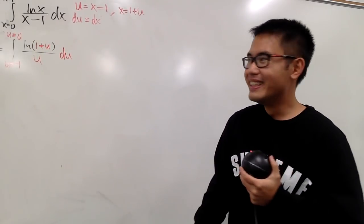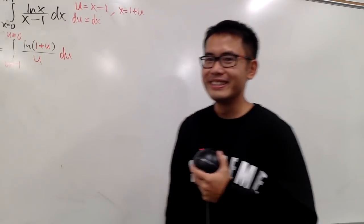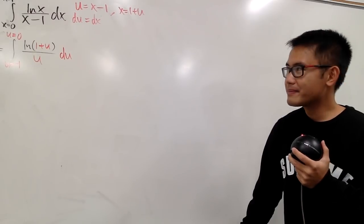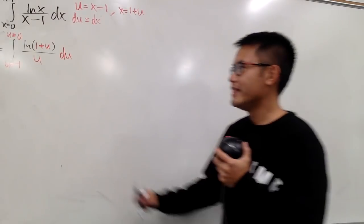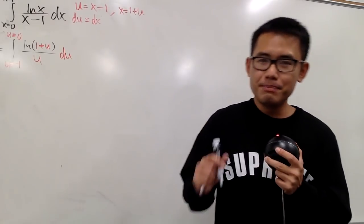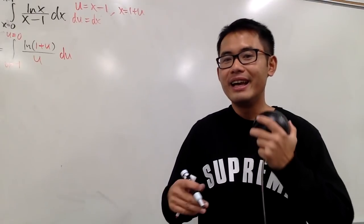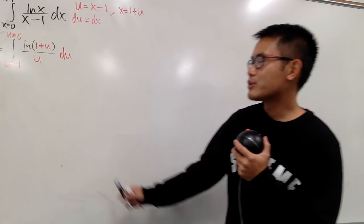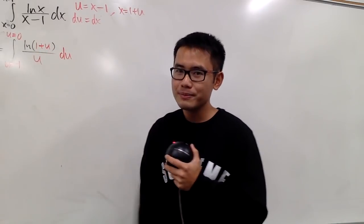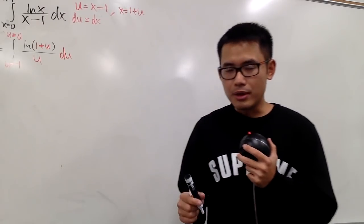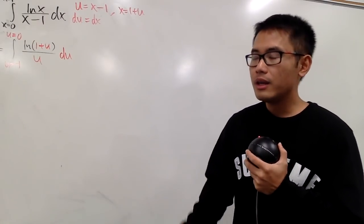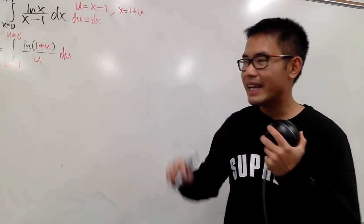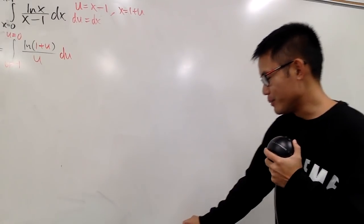What can we do then? Whenever we cannot integrate a function, the best bet is approximation. To do approximation, we can use power series. Let's try to come up with a power series for ln(1+u)/u, and then integrate that power series. Remember, a power series is just a way to represent a complicated function in terms of infinite polynomials, and we can totally integrate polynomials.